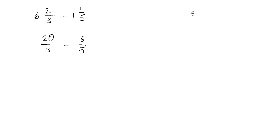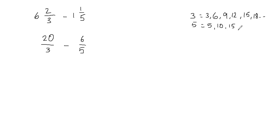To find the common denominator, we will find the least common multiple of 3 and 5 by listing their multiples. Multiples of 3 are 3, 6, 9, 12, 15, 18, and so on. Multiples of 5 are 5, 10, 15, 20, 25, and so on. We're looking for the smallest multiple common to both, which is 15. So the least common multiple of 3 and 5 is 15.